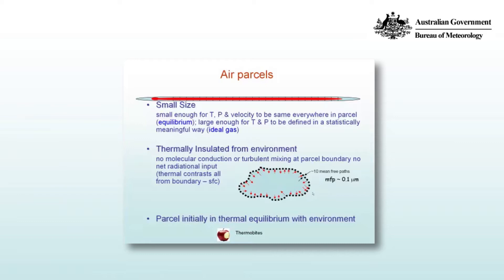Firstly, an air parcel must have a small size — small enough such that temperature, pressure, and velocity are the same everywhere in the parcel. In other words, there's equilibrium within the parcel. It also needs to be large enough for the temperature and pressure to be defined in a statistically meaningful way; in other words, our parcel needs to be big enough to be considered an ideal gas.